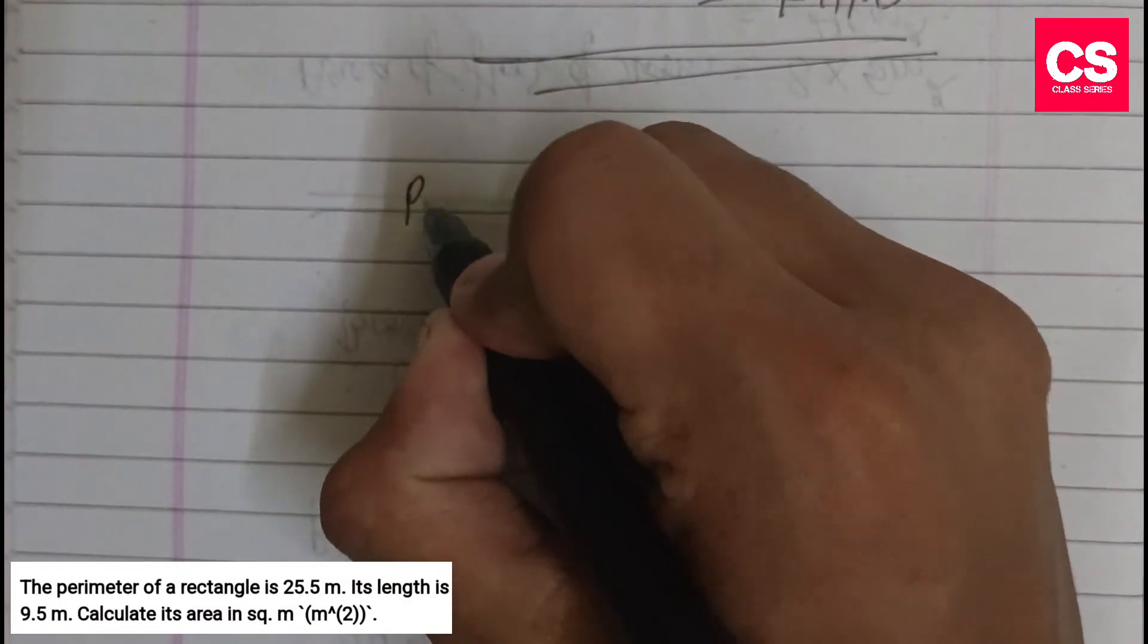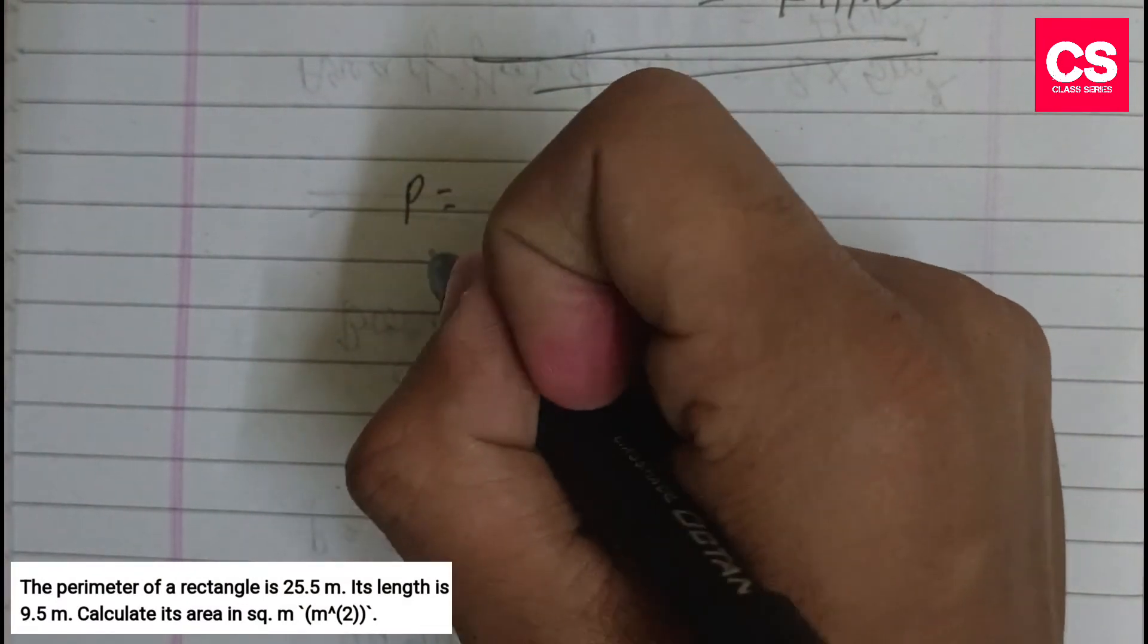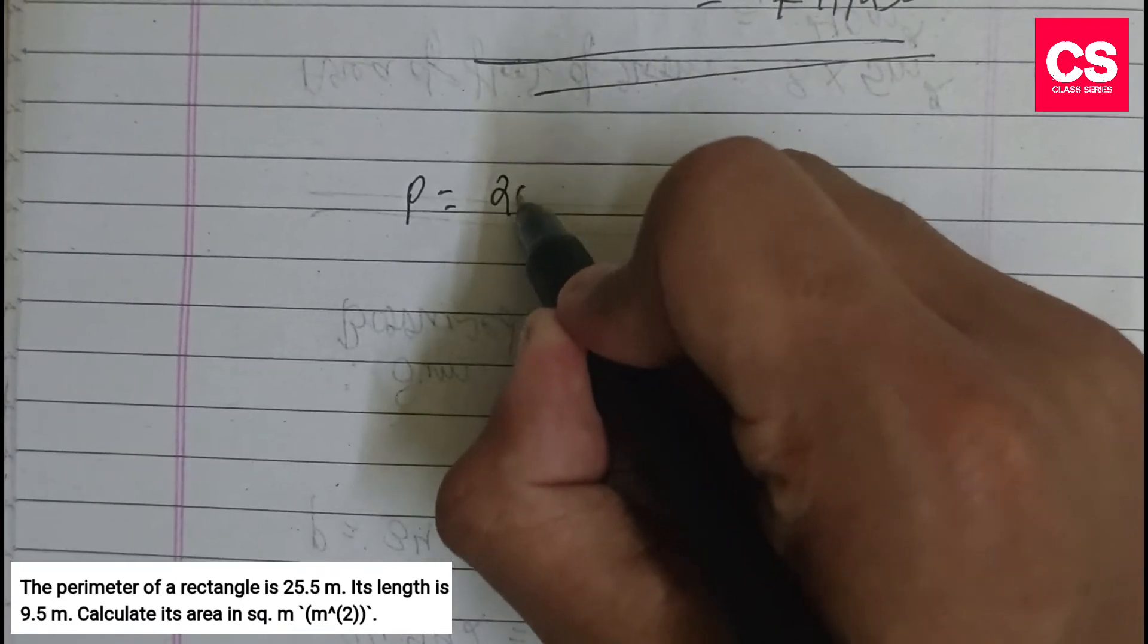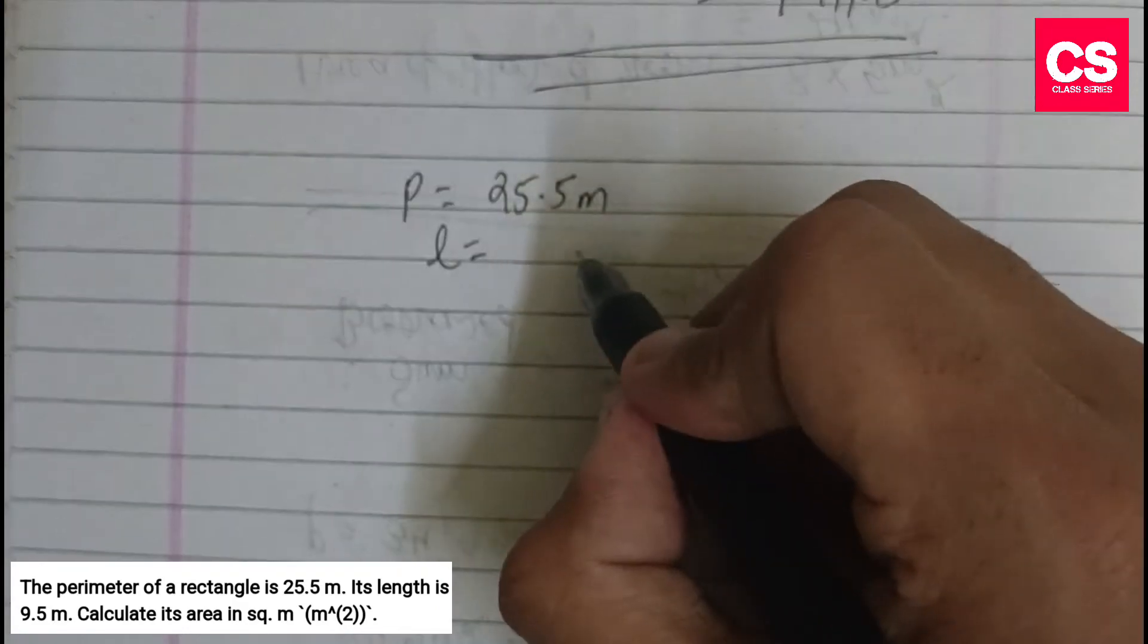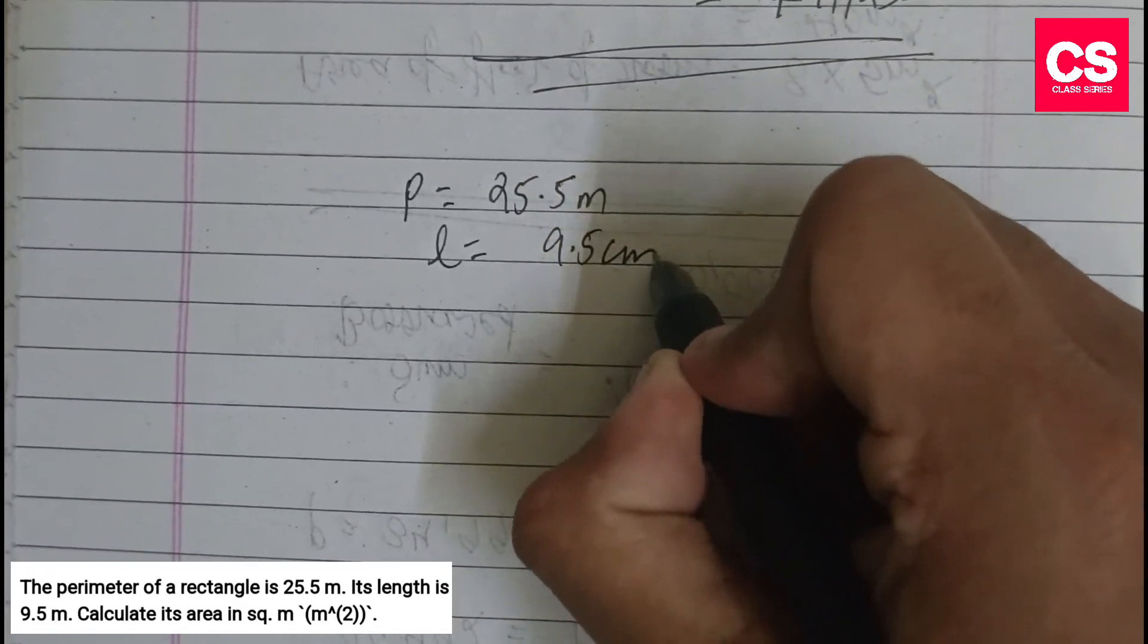We have the given data: perimeter of a rectangle is 25.5 meters and length is 9.5 meters.